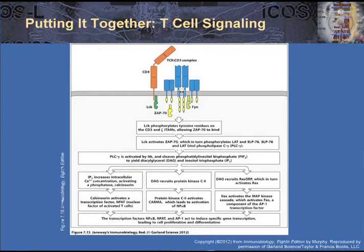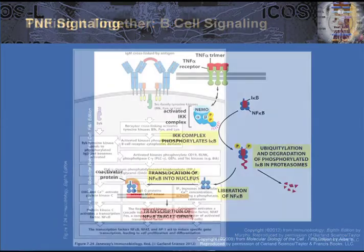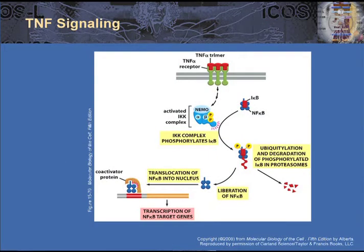In the case of B-cell receptor signaling, you can see that there are Src family kinases associated with this receptor, as well as SYK, again resulting in a cascading set of events after receptor binding. Other pathways mediated through kinases include the I-kappa B kinase, which is important in T-cell receptor signaling, leading to the activation of NF-kappa B and NF-kappa B-associated target genes.